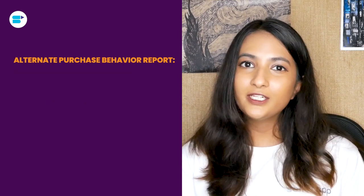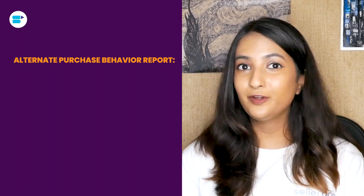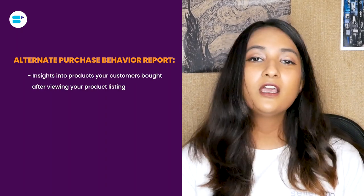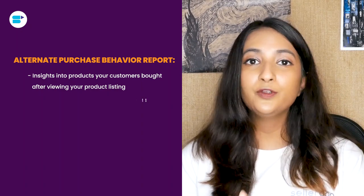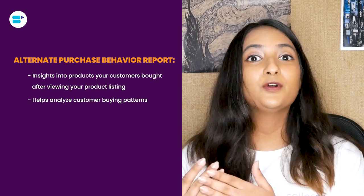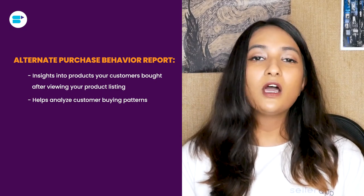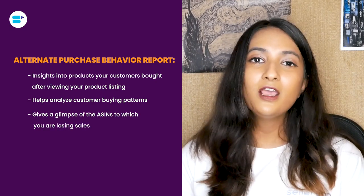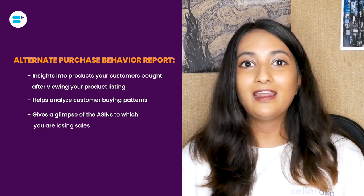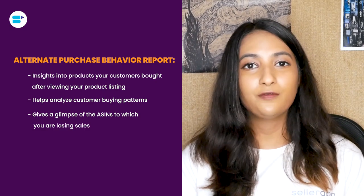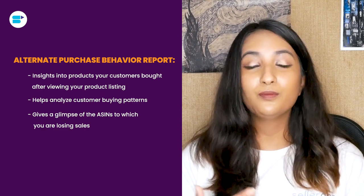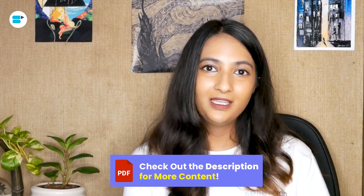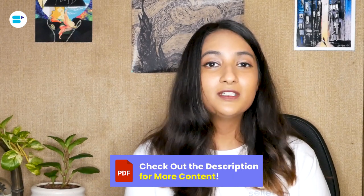Next is the Alternate Purchase Behavior Report — one of my favorite reports in Amazon Brand Analytics. This report shows you when a customer viewed your product but did not buy it, which product did they end up purchasing instead. This tells you about the alternate behavior of the customer — what they were planning to buy versus what they actually purchased. This helps you identify your competitors and their ASINs, understand what is and isn't working for your competitors, and figure out how you can improve your product on Amazon.